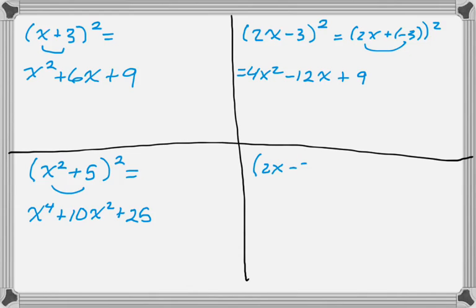Let's look at one more. So we have 2x minus 3y, the quantity squared. So square the first, 4x squared. Multiply them together gives me negative 6xy. Double it is negative 12xy. And then square the last to get 9y squared.